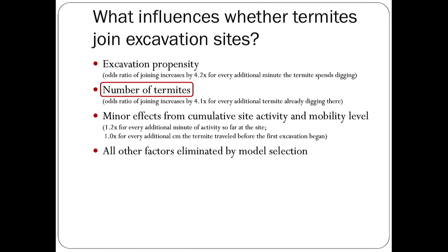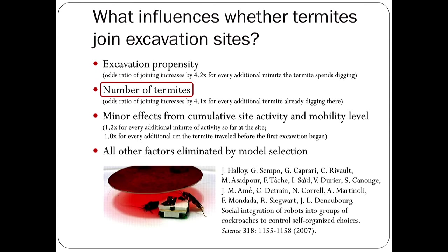The number of termites seems like a really important factor, which makes some sense in retrospect. Termites are social cockroaches, and there's a body of work about other cockroaches and their attention to aggregation. Non-social cockroaches like to gather together in the same place, so it's maybe not surprising that termites — the social cockroaches — would be paying attention to where others are and what they're doing to help decide what to do.